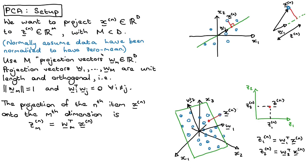We can give this matrix of all projection vectors a name — call it capital W. Specifically, W is defined by stacking W1, W2, up to W_M along the columns, giving a D×M matrix. This tells us: given a specific data point and the projection vectors, we can map it to the lower dimensional embedding by computing W transpose times X_N — one line of Python. So given X_N in three dimensions, with one line of code you can get the corresponding Z_N.